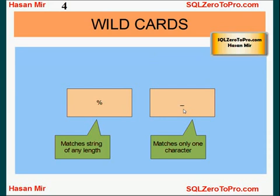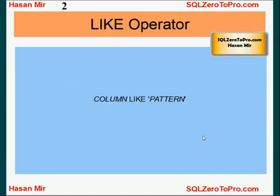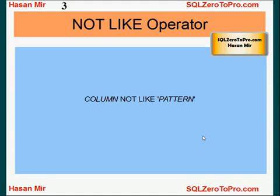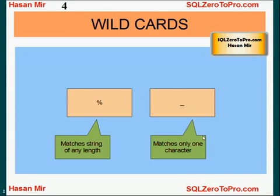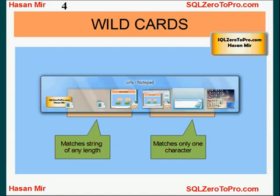So before we go to Oracle, what we have learned in this tutorial is the LIKE operator. We will use the LIKE operator if you want to select all the rows where the value in a certain column is matching a certain pattern. And in order to write patterns, we will use wildcards — percentage and underscore.